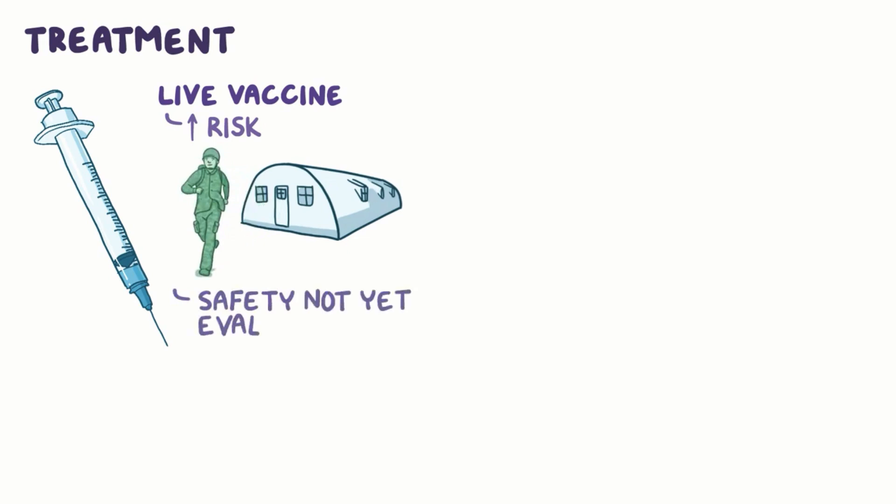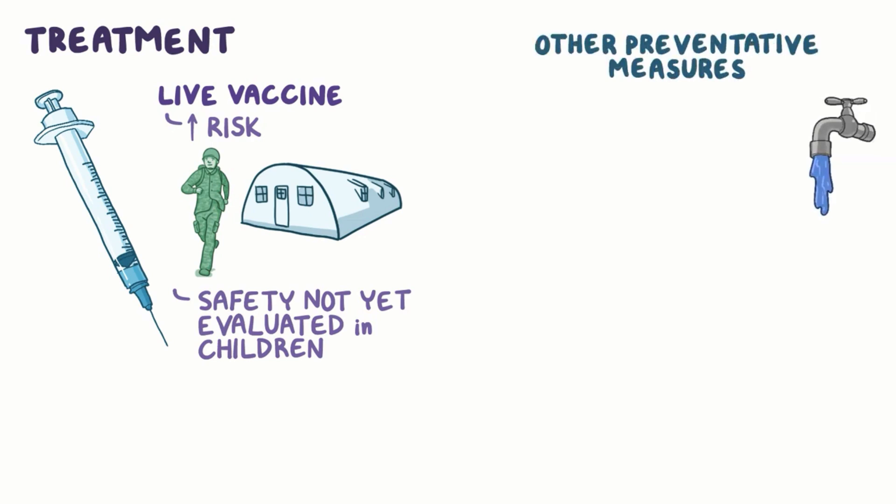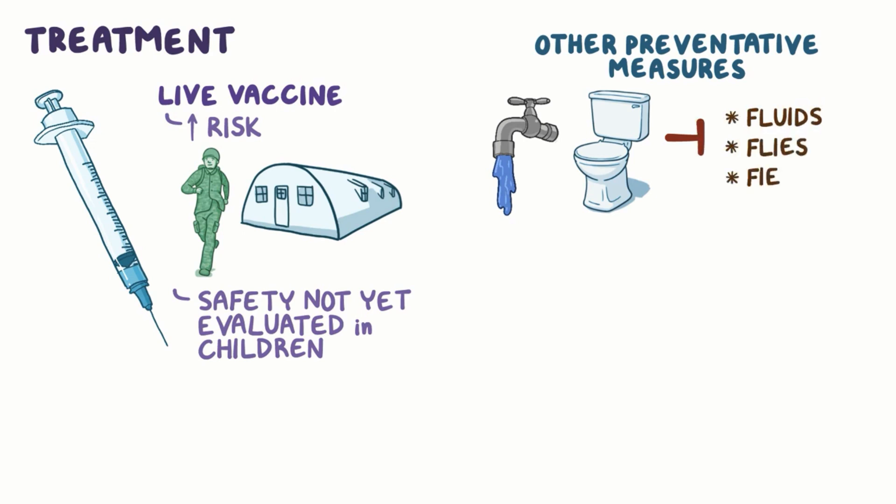The safety of the vaccine has not yet been evaluated in children. Other preventative measures include proper water and sanitation facilities, which block fecal-oral transmission by fluids, flies, and fields, three of the four Fs. Handwashing with antiseptic soap and water, and sanitizing surfaces that would have come into contact with respiratory droplets or stool, can prevent transmission by fingers.